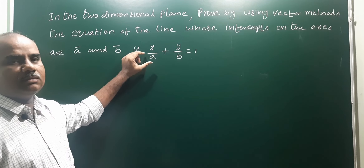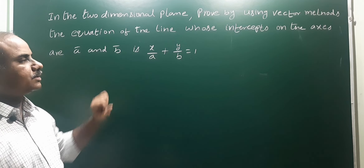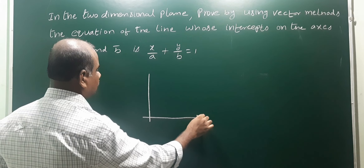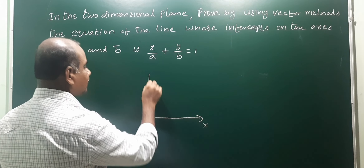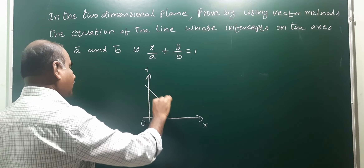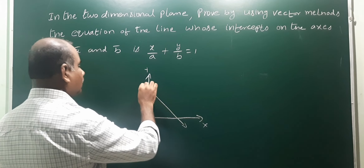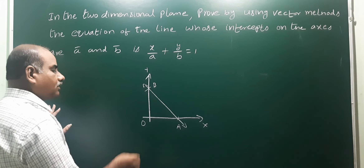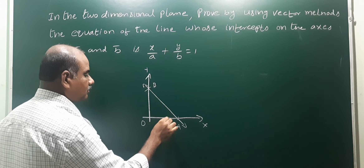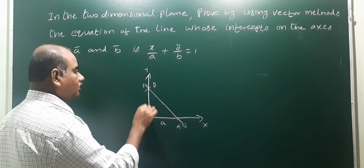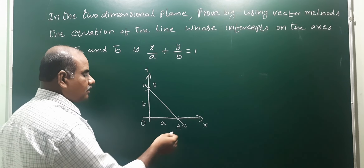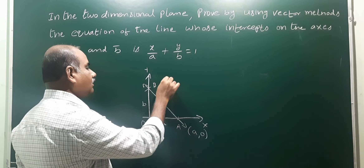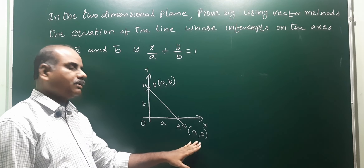So the simple intercept form of the line using vector methods. Let us draw a rough diagram with coordinate axes — x-axis and y-axis. On the x-axis mark point A at distance a from the origin, and on the y-axis mark point B at distance b. So coordinates of A are (a, 0) and coordinates of B are (0, b).